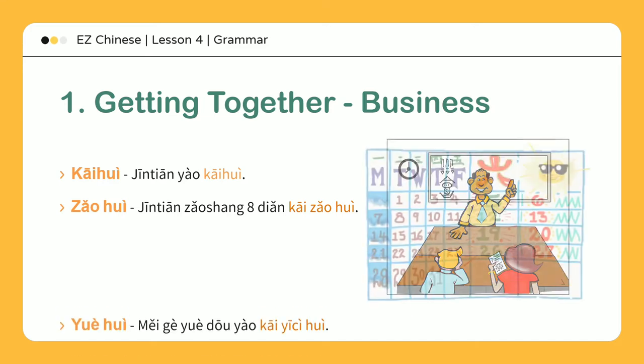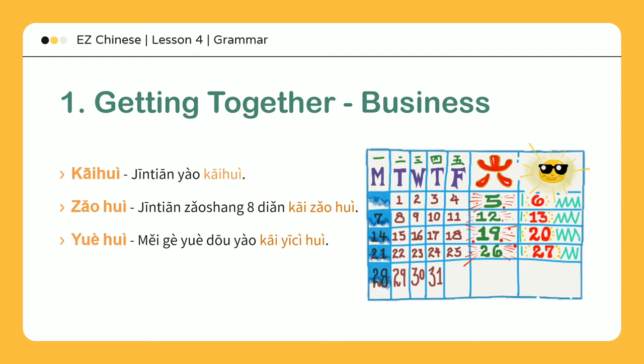月会: 每个月都要开一次会 — Monthly meeting. There will be a meeting held once each month. 年会: 每年十二月开年会 — Annual meeting. There is a meeting every December.